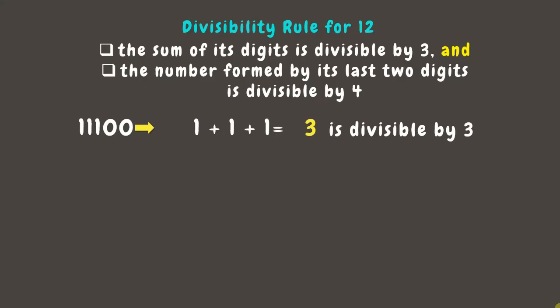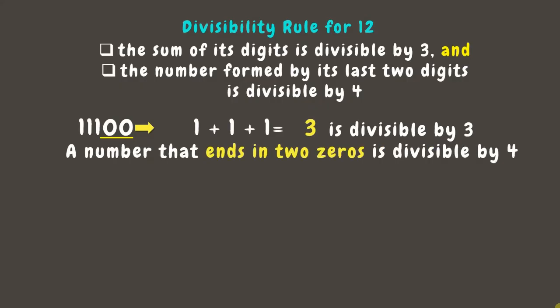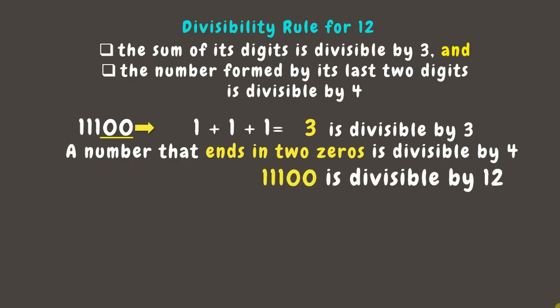Next, check if it is divisible by 4. Look at its last two digits. Here, the last two digits are zeros. We learned the divisibility rule of 4 that a number that ends in two zeros is always divisible by 4. Therefore, we can say that 11100 is divisible by 4. Now, since it's divisible both by 3 and 4, we can already say that 11100 is divisible by 12.